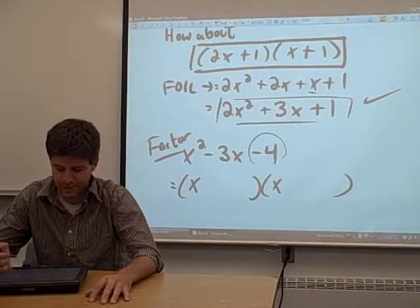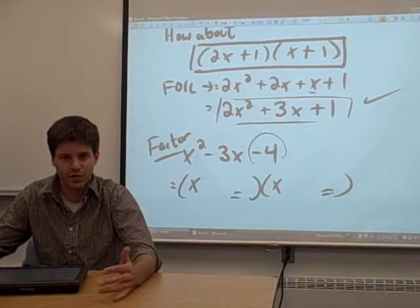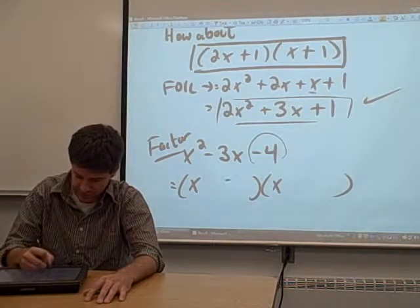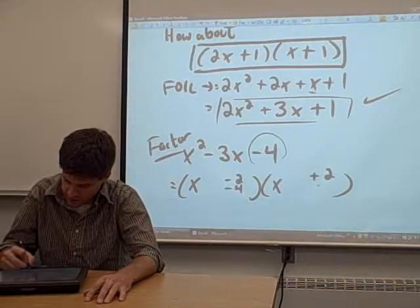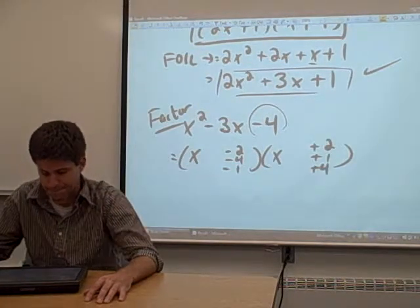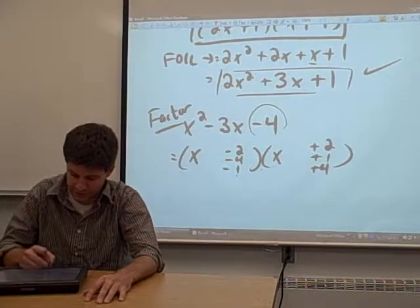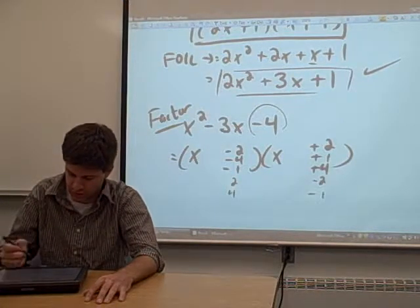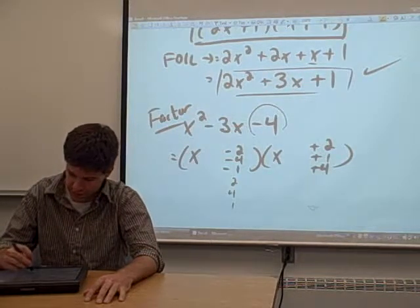Now our last term has to be negative 4. These two terms here have to multiply to be negative 4. So we have more than one option: negative 2 and positive 2, negative 4 and positive 1, negative 1 and positive 4. And we could switch all the negatives and plus signs: 2 and negative 2, 4 and negative 1, 1 and negative 4. So keep all those options in mind.